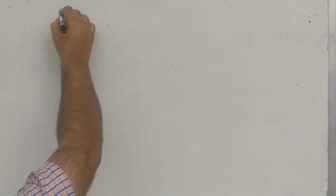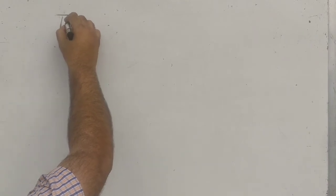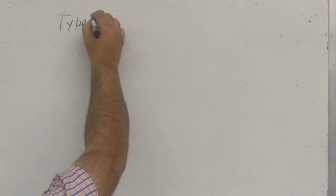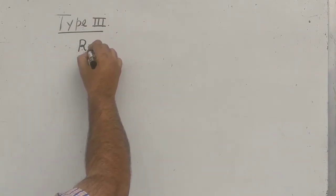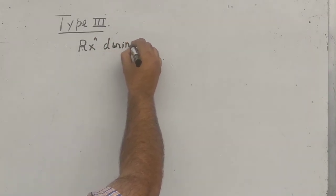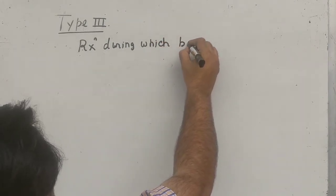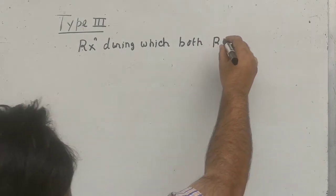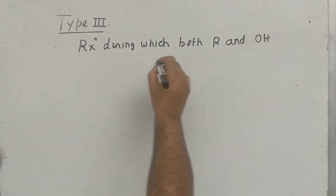Good morning students, today is 6th April. We're going to start with the last properties of alcohol — that is Type 3 property. Till now we discussed two chemical properties of alcohol: the first one was in which the carbon-oxygen bond breaks, and the second one was the reaction in which the OH bond breaks. Now we are going to discuss a third category reaction. Today we are going to discuss Type 3, Category 3 property — a reaction during which both the alkyl group and OH will participate.